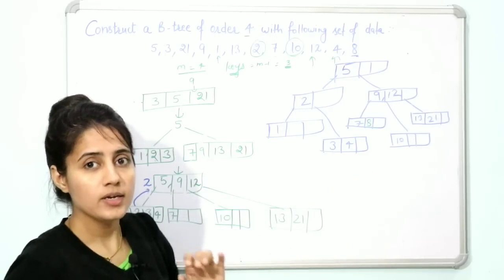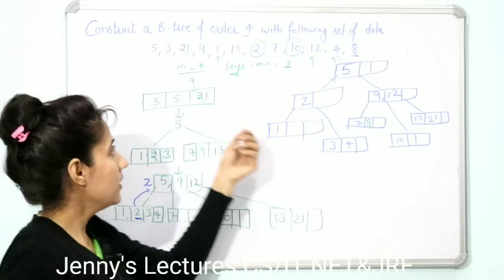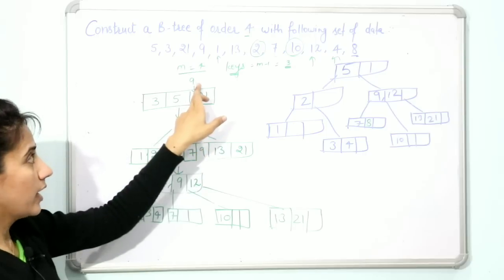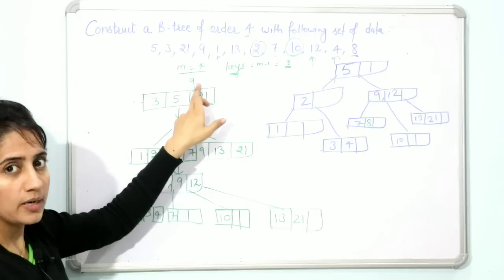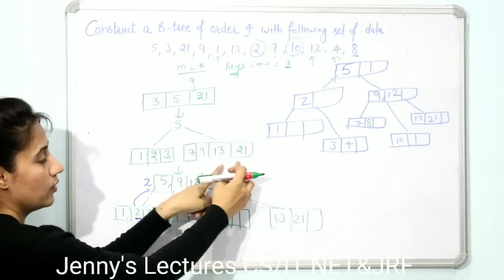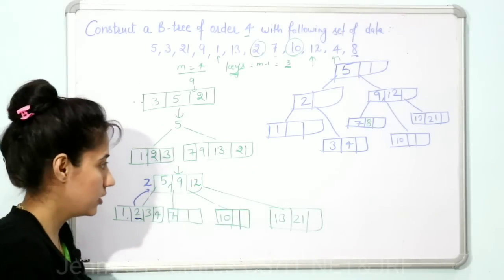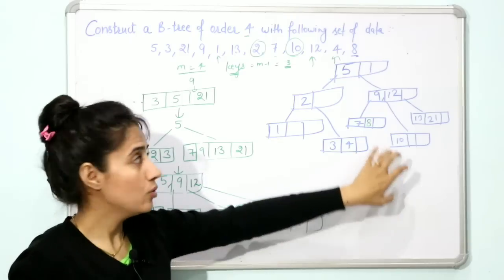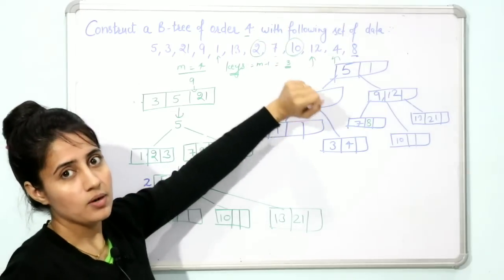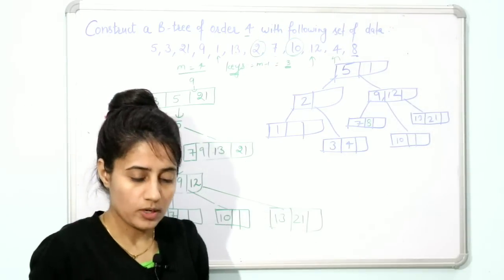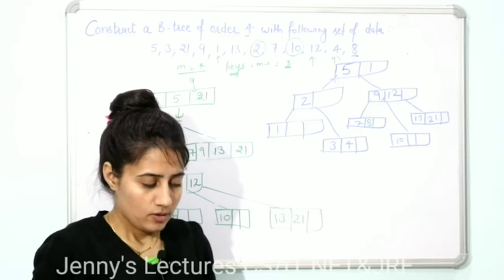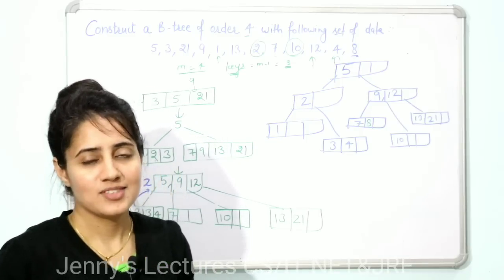Another variant exists: a right-biased tree. You can take 9 as the middle element, placing [3, 5] on the left and [21] on the right, and proceed similarly. When the order is even, two trees are possible — one left-biased and one right-biased. I'll see you in the next video. Bye bye, take care!